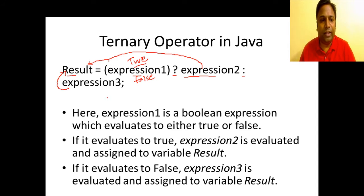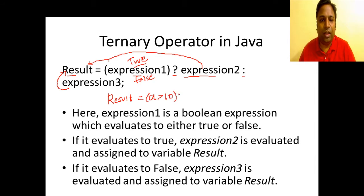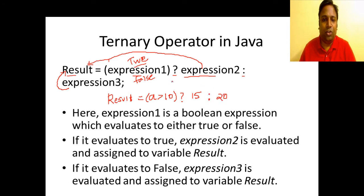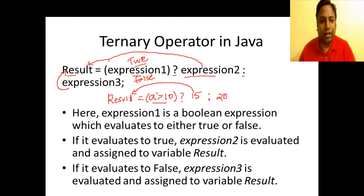To understand this better, let us substitute with some values. We will write: result is equal to — for expression 1, let me compare: if a is greater than 10, that's expression 1. Question mark — if a is greater than 10, I am going to assign 15 to result. Otherwise, I am going to assign 20. So first it evaluates: if a is greater than 10, 15 gets assigned; if not, 20 gets assigned.